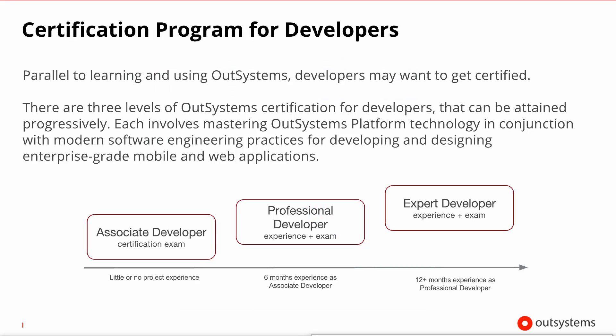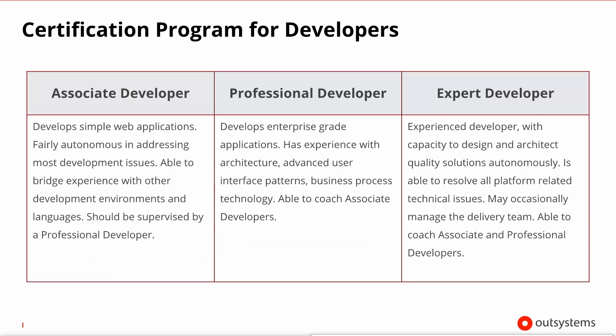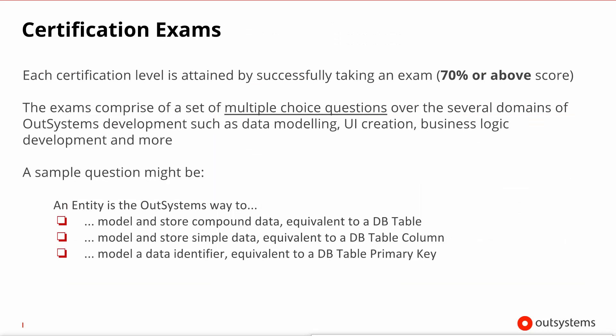Since we get a lot of questions about certification in OutSystems Technology, let me briefly take you through the levels that exist in the Developer Certification Path. You can begin by taking an exam to become an Associate Developer with very little or no project experience. Once you've been an Associate Developer for 6 months and have been working with the platform, you can apply and take the Professional Developer Exam. Upon continuing development for 12 more months, you can apply and take the Expert Developer Exam. As you progress through these levels, the exams will validate your seniority in and knowledge of the platform. Exams at all levels are multiple-choice question based, and you need to score 70% or above to succeed and get the certification level.